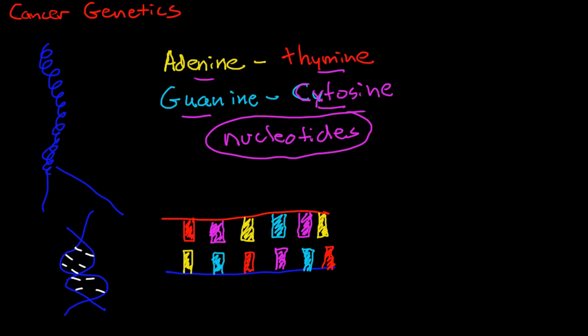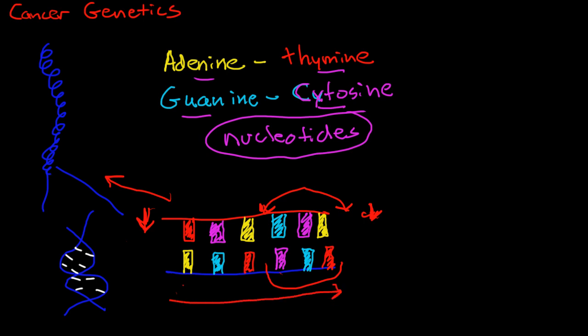Each of these strands of DNA that are wrapped up in a coil of a chromosome has millions of these base pairs that are lined up. And thousands of base pairs lined up will have a start codon and a stop codon. A codon is a row of three nucleotides that are meaningful. There are start codons and stop codons that signal the beginning and the end of a gene. So a gene is a series of nucleotides that is meaningful to the body.